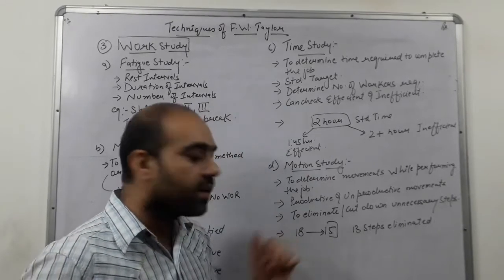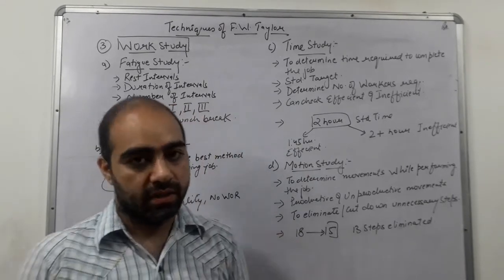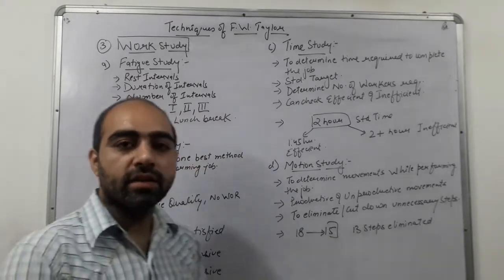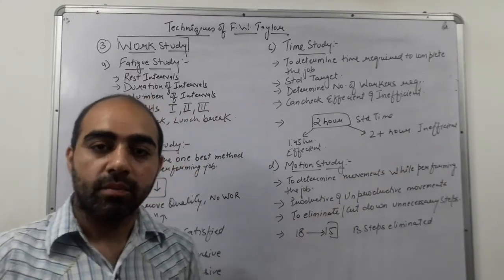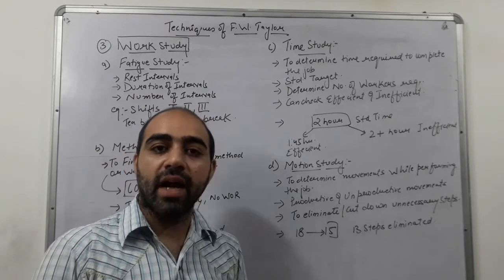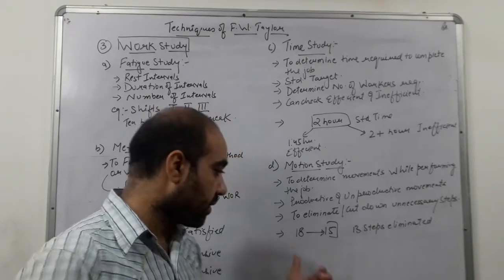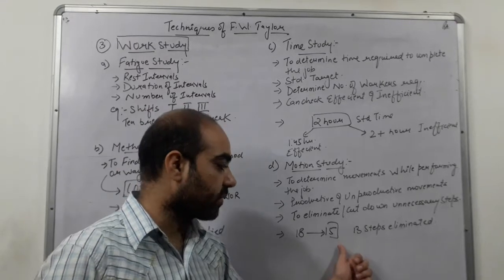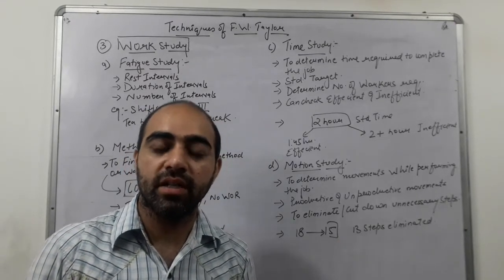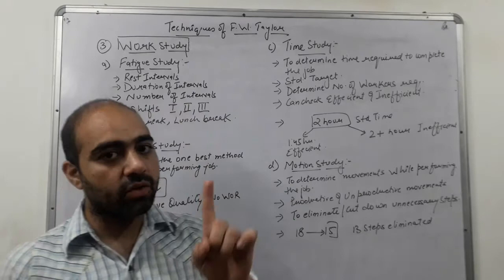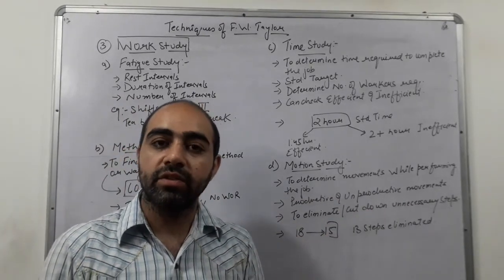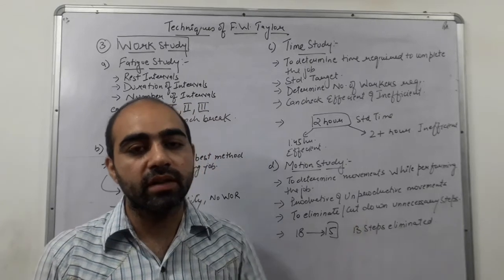For example, a worker takes 18 steps to pick up a brick and place it. F.W. Taylor found that the same work can be done in just 5 steps, meaning 13 steps were unproductive. If the worker performs this activity a thousand times a day, that means 13,000 steps were unproductive — eliminating them saves significant energy.